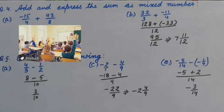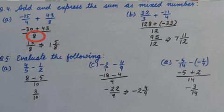LCM is 8, and then numerators will be minus 30 plus 43. Very good. When we add them, answer will be 13 upon 8. Because it is an improper fraction, we will convert it into mixed fraction. And you know how to convert into mixed fraction.